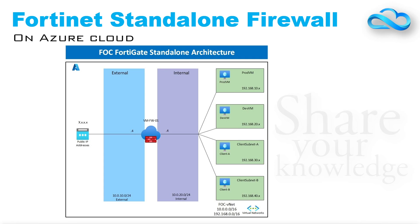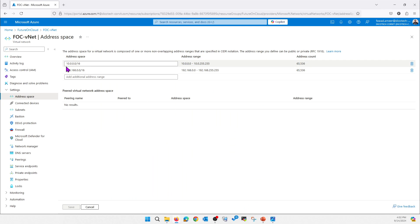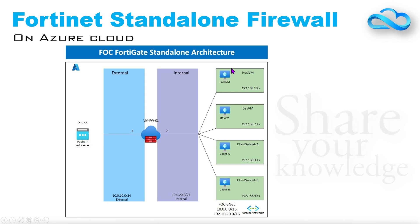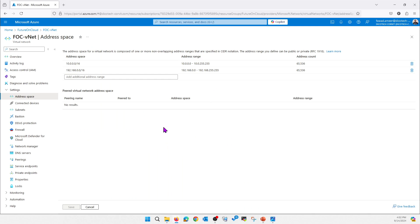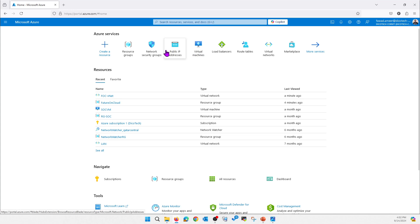Let's start the deployment of our first virtual machine, which is the ProdVM, and then the DevVM. We will observe how traffic is passing through by default on these virtual machines, because by default whenever you configure a virtual machine it will get internet access via the Azure cloud.